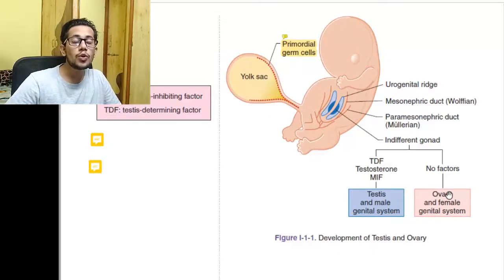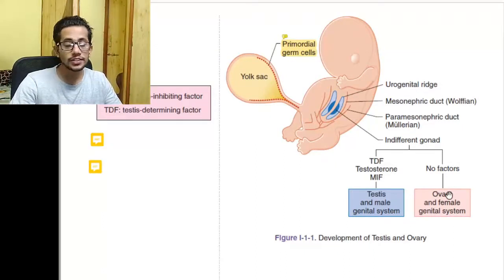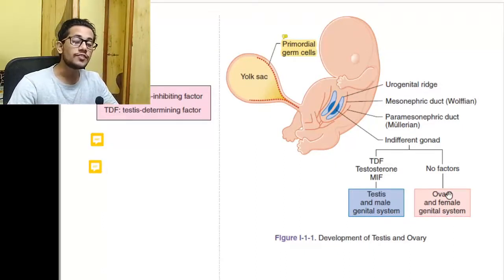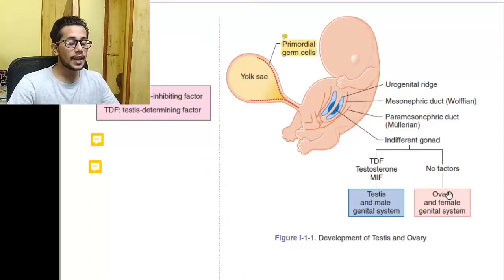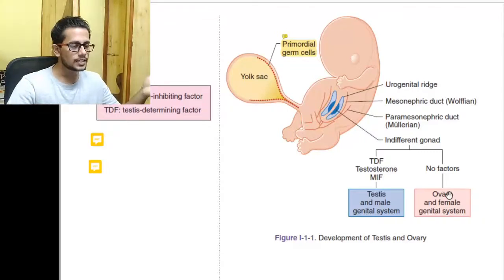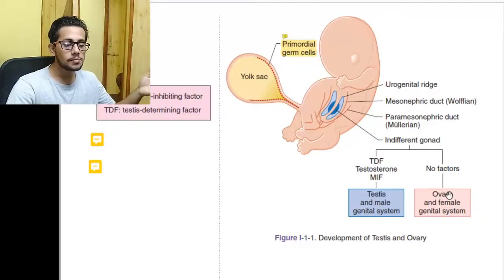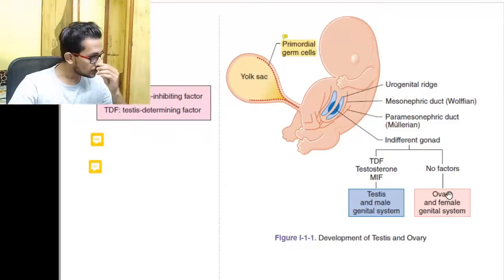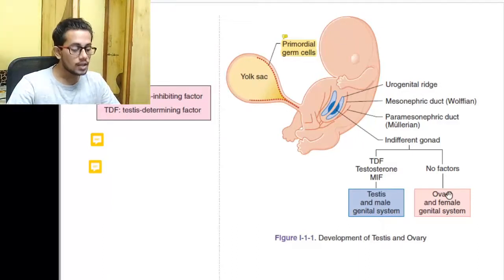Now we need to know how the gonad develops into either a testis or an ovary. For that, we only need to focus on two things: TDF and MIF. TDF stands for testis determining factor — it helps determine the indifferent gonad into a testis. MIF is Müllerian inhibiting factor, which inhibits the production of the ovary.